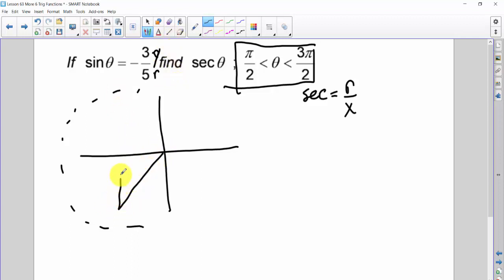So here's my 5. Here's my negative 3. This looks exactly like a 3, 4, 5 right triangle. And it will be. So now I need my secant, which is r, 5 in this case, over my x, which is negative 4. And that's my secant of theta.